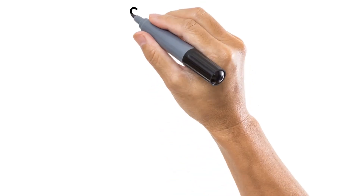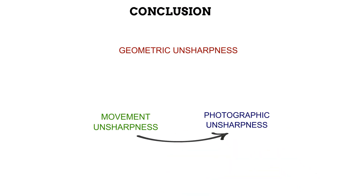We stated earlier that every radiographic image possesses some degree of unsharpness. The three sources of unsharpness are linked — in a bid to control one, another emerges. For example, in the case of an uncooperative patient, the radiographer may use a fast intensifying screen to control movement unsharpness, but this will inevitably increase photographic unsharpness due to the larger phosphor size. Similarly, using a small focal spot to avoid geometric unsharpness will almost always require increasing exposure time, making movement unsharpness more likely. This cycle explains why no image can be 100% unsharpness-free. The radiographer must, however, ensure unsharpness is reduced to the lowest level possible.